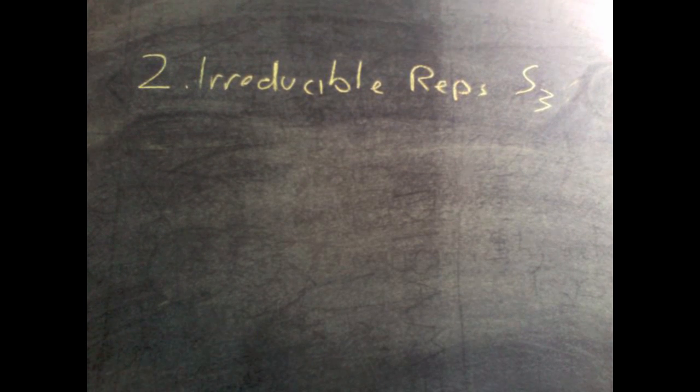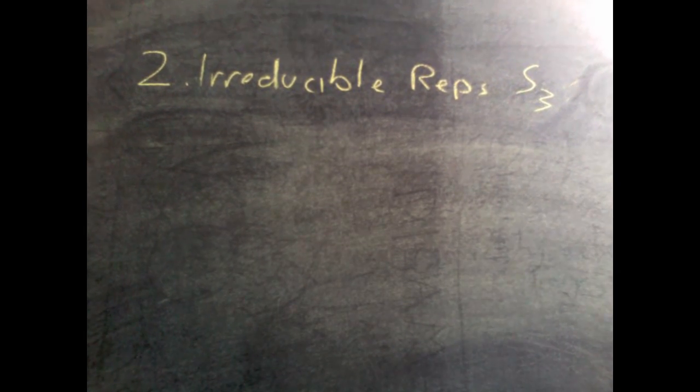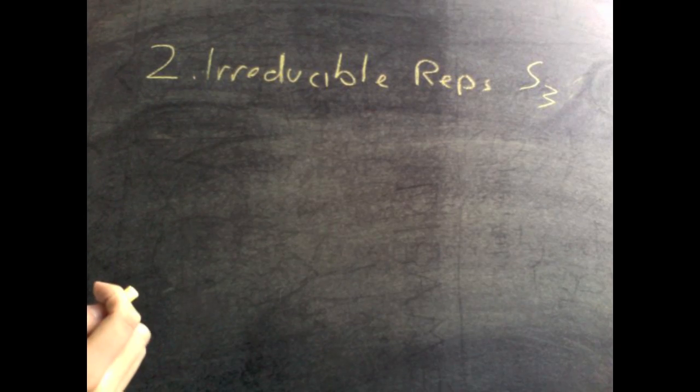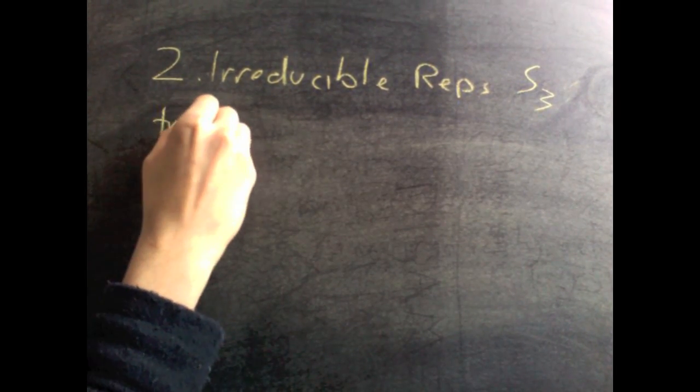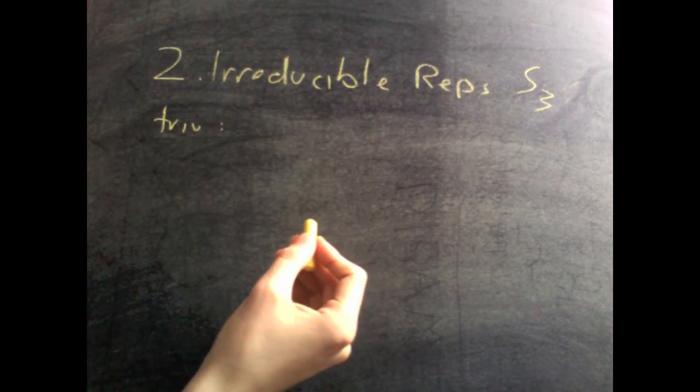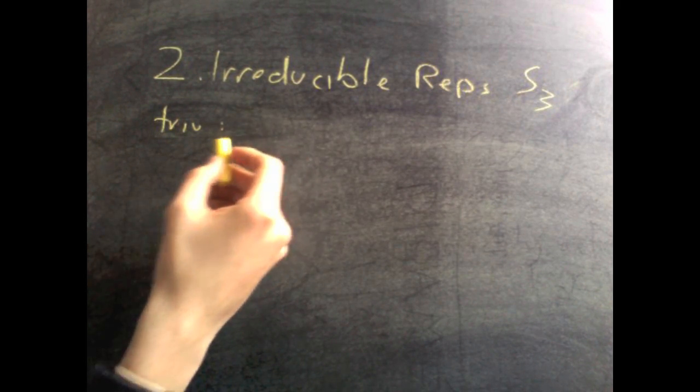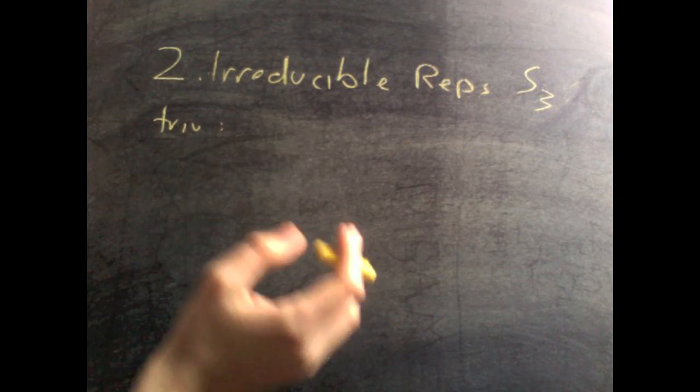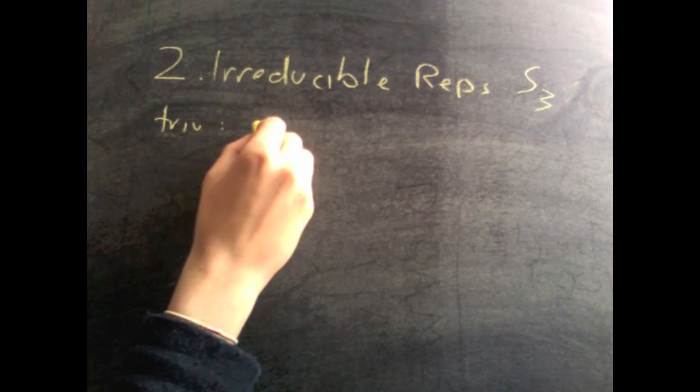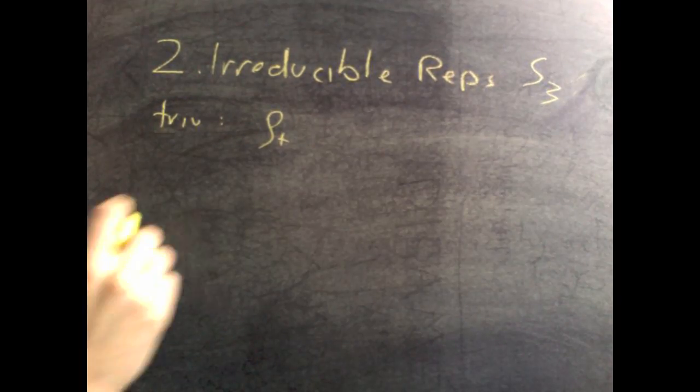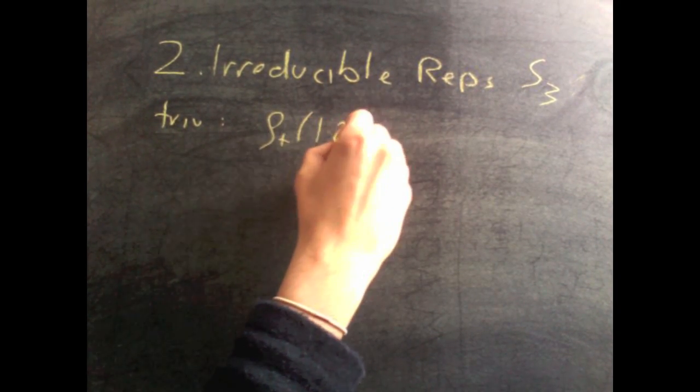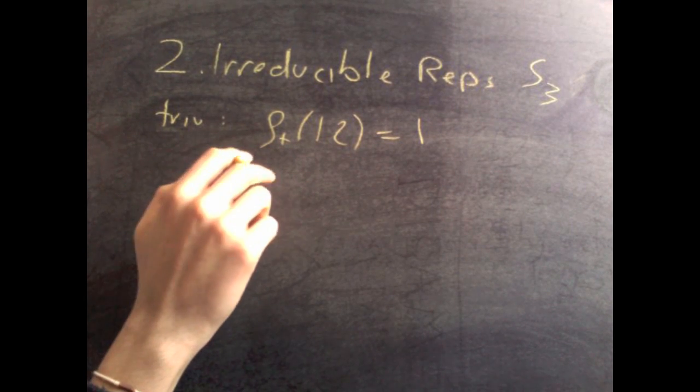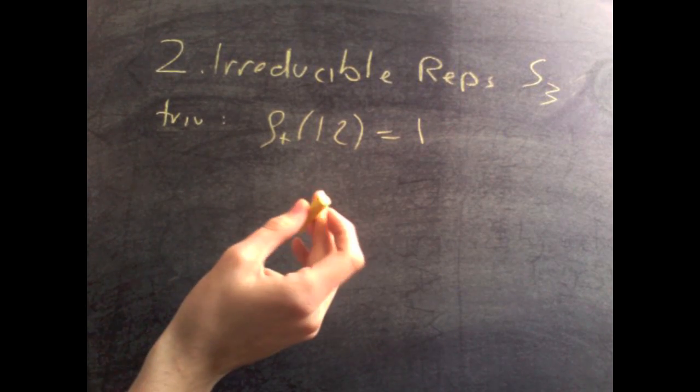Now, obviously, we want to know what happens to our conjugacy classes, which are cycle shapes. We want to know what happens, what the trivial representation does to the 2-cycle and to the 3-cycle. Here you just have to remember that the 2-cycle in S3 is like a reflection in D6. So rho sub t of the 2-cycle does, well, this is the trivial one, so it's going to be equal to 1, but this is what rho sub t would have done to Y, the reflection.